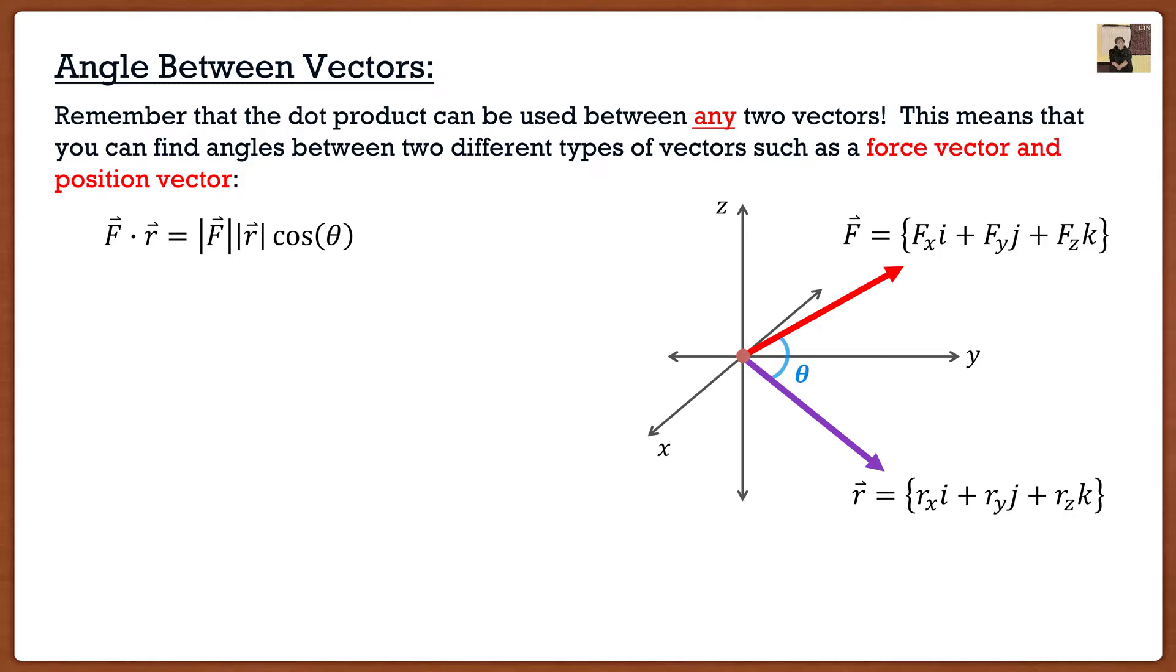So normally when students see this angle between vectors, they think, I need to convert the position vector to a force vector, and then dot the two force vectors together. Now, you can do that. It's going to give you the right answer, but it's that extra step of converting the position vector to a force vector that's going to take up your time. The key to these exams in engineering is solving things as efficiently as possible so you have enough time to finish the exam. Now, that's the major problem, so any sort of trick you guys know will always help you.